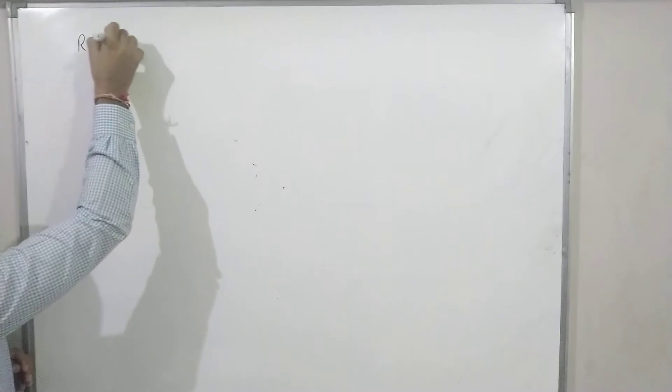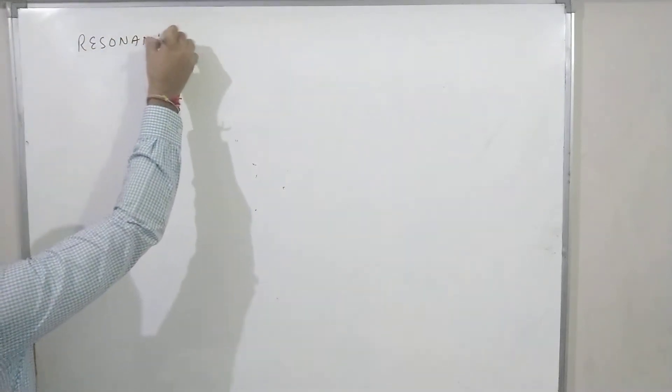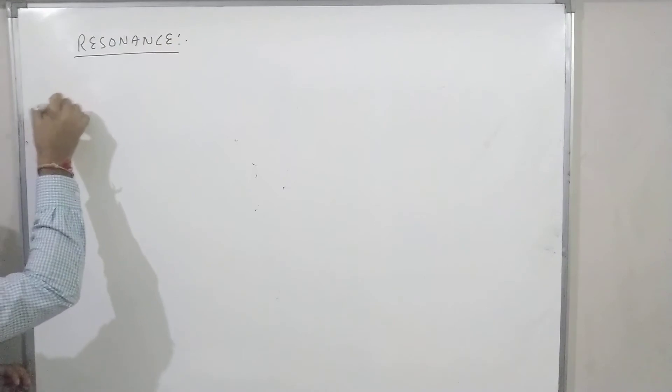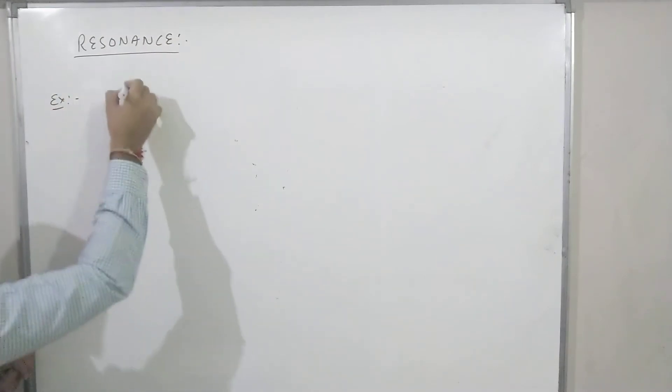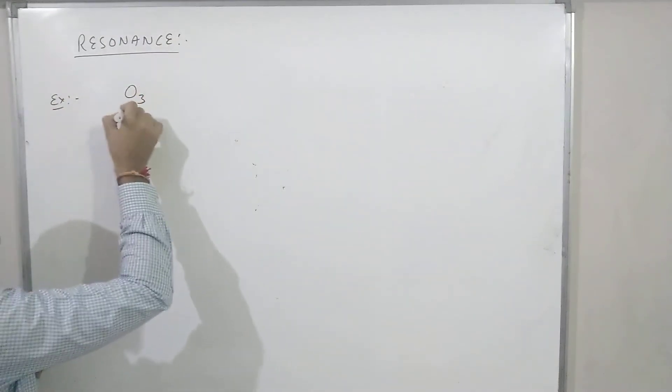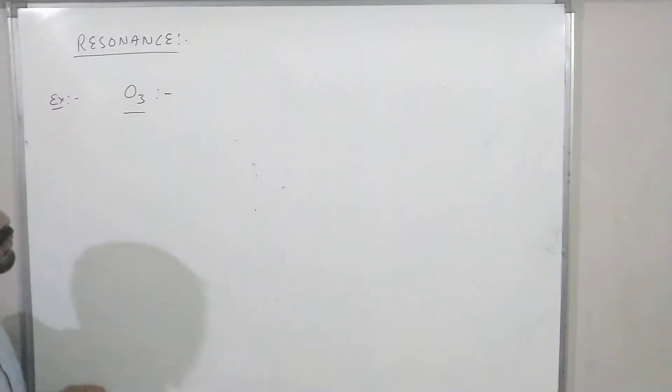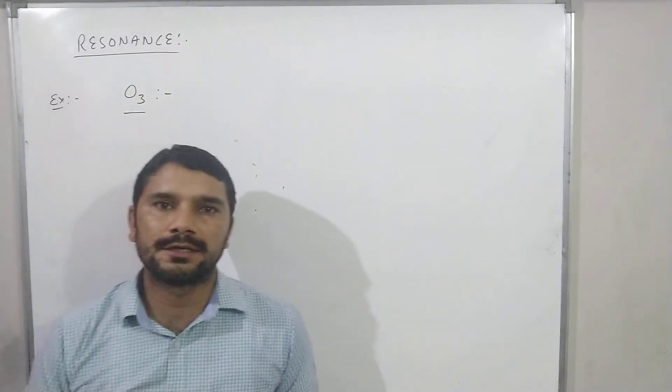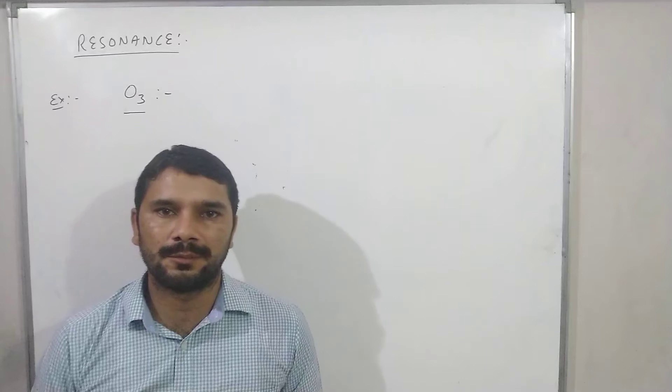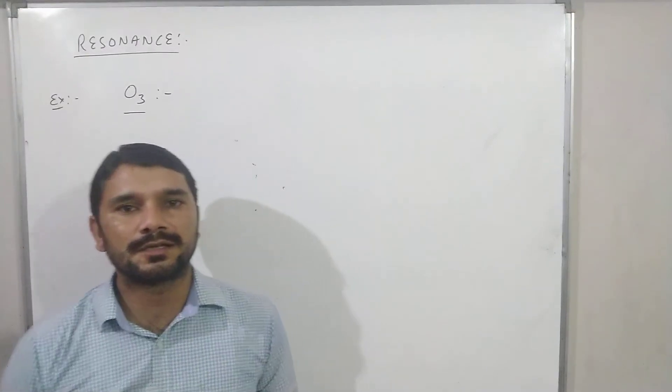Hello students. In the last lecture we discussed the concept of hybridization. Now today we are going to study a new topic called resonance. Ozone is a gas which protects us from the harmful UV radiations coming from the sun, and this gas is present in the stratosphere.